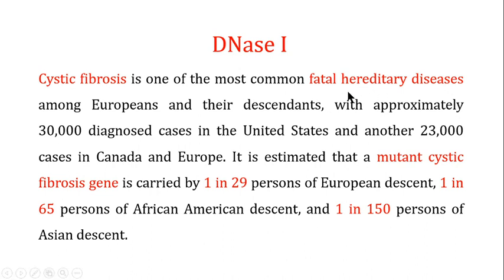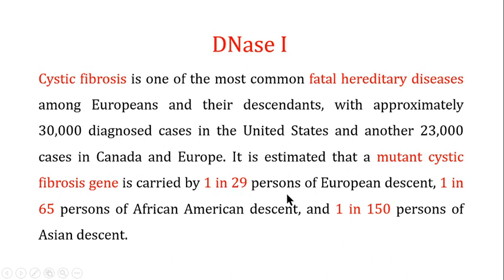Cystic fibrosis is one of the most fatal hereditary diseases among Europeans and their descendants, with approximately 30,000 diagnosed cases in the United States and another 23,000 cases in Canada and Europe. It is estimated that a mutant cystic fibrosis gene is carried by one in 29 of European descent, one in 65 of African American descent, and one in 150 of Asian descent.